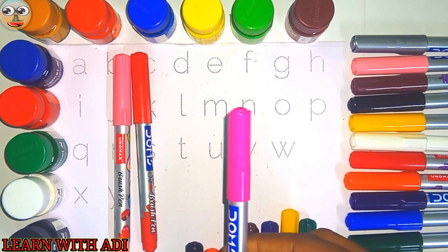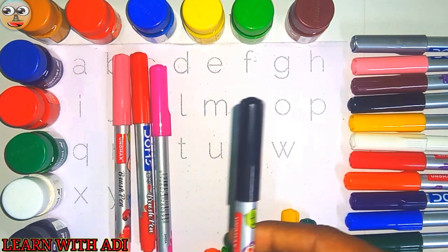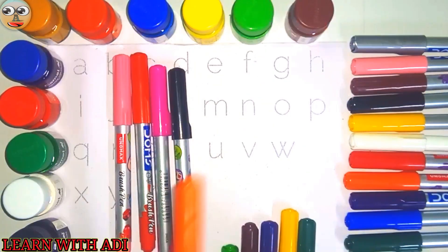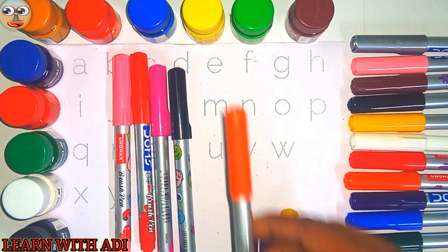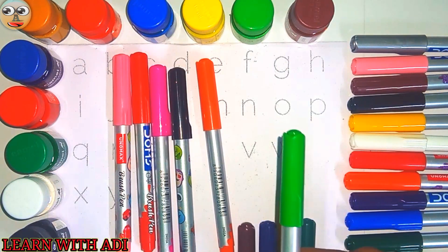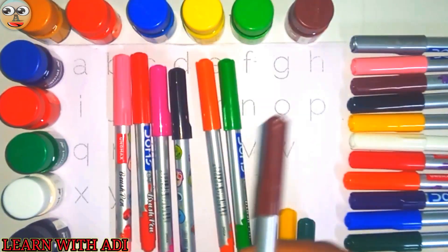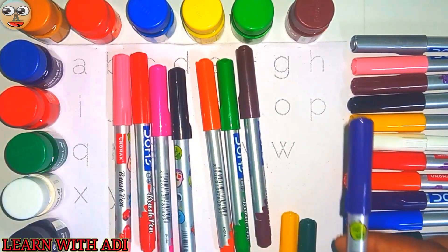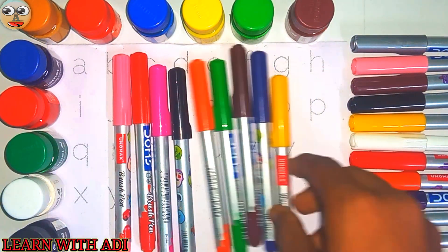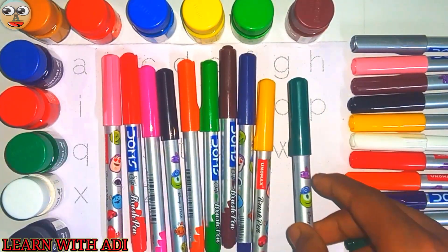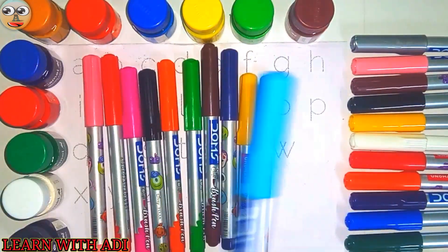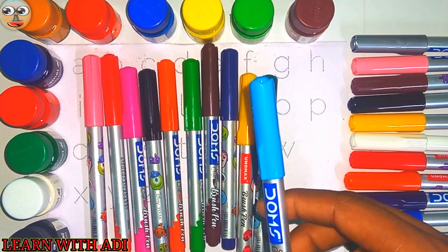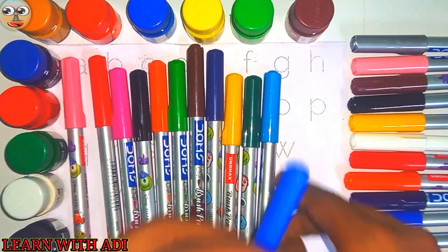This is pink color, this is black color, this is orange color, this is green color, this is brown color, this is purple color, this is yellow color, this is dark green color, this is sky blue color, and this is blue color.